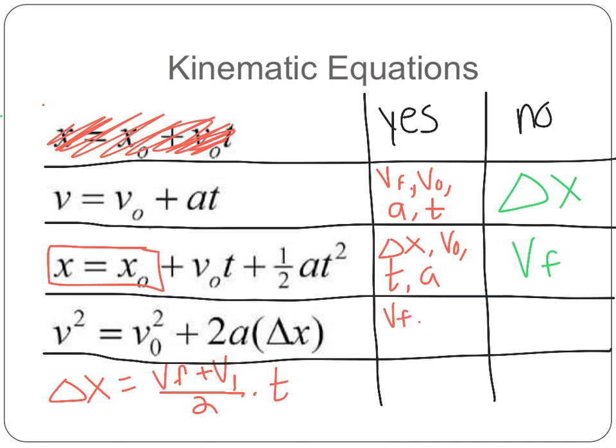Next one. I have Vf, V0, A, and delta x. What don't I have? I do not have t. And lastly, for the equation I added, we have delta x, Vf, Vi, and t. What don't I have? I do not have acceleration. So this chart is going to be essential for us actually using our kinematics equations in word problems.